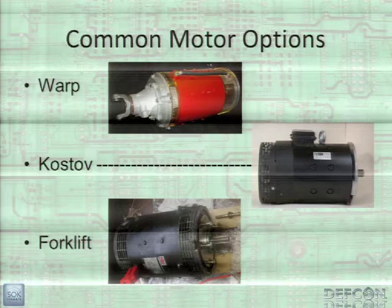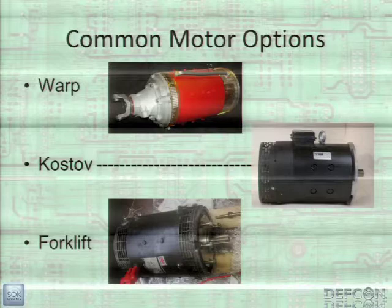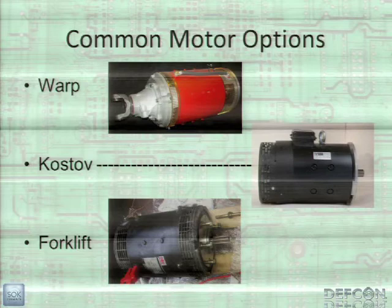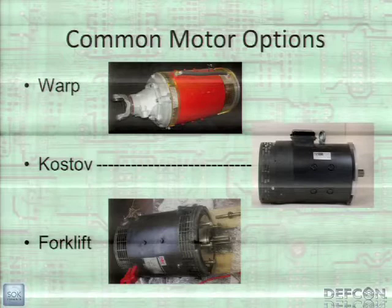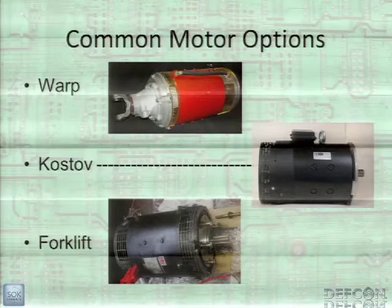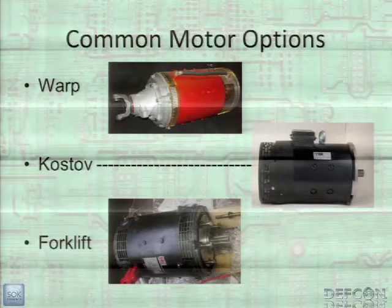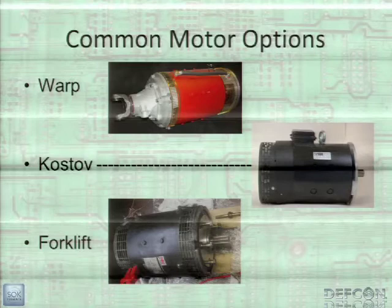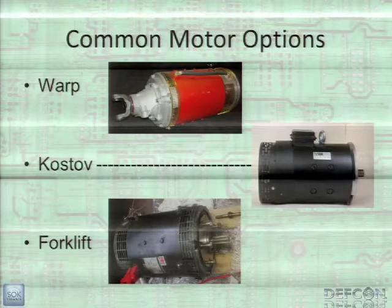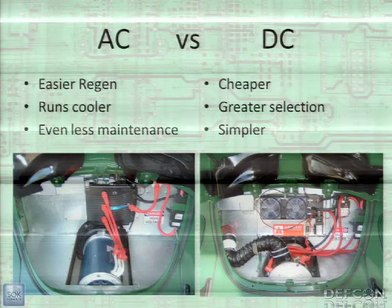Some common motor options: there are Warp motors in the U.S. The same company makes an Impulse motor that's a bit shorter and fits better in some cars like VW Bugs. For people in Europe, Kostovs are very popular. Motors are usually around 60 to 150 pounds, so shipping costs can be high — that's why Europeans prefer local options. Also popular are forklift motors: you take a 30-year-old motor, recondition it, and up the voltage. You get a road-going motor that's already proven over 30 years, and can put another 30 on it, for under $200 total.